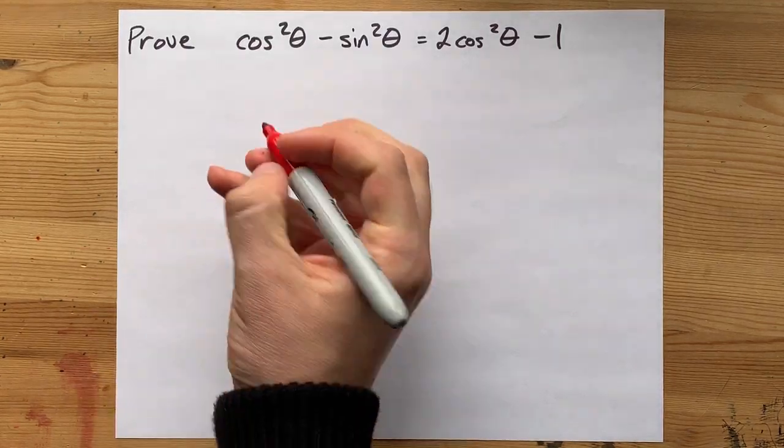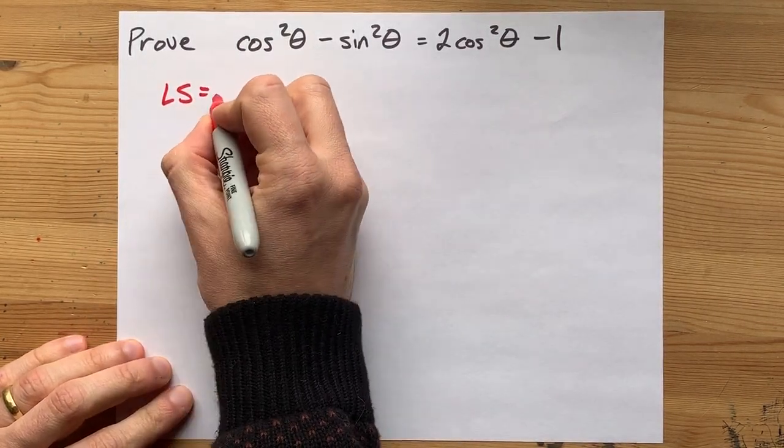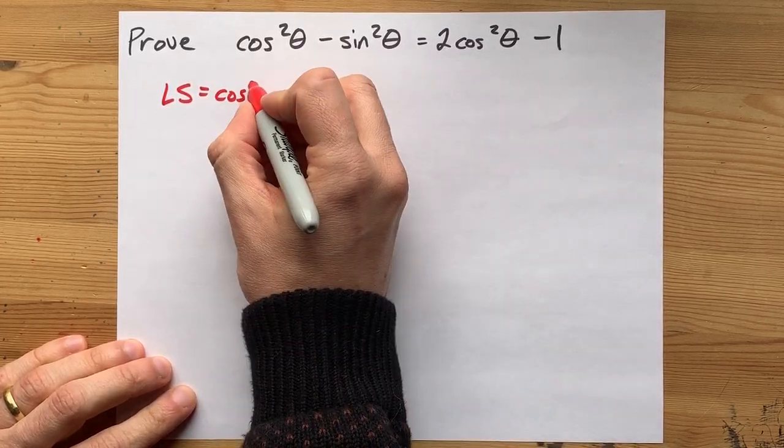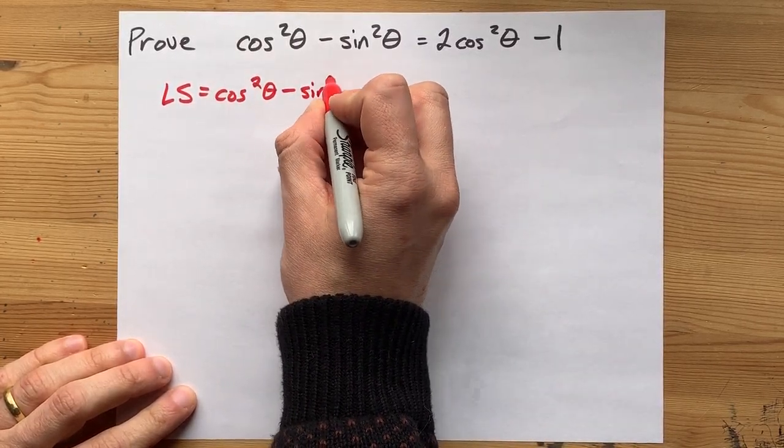Can you prove that cos squared minus sine squared of an angle is equal to two cos squared minus a full one?